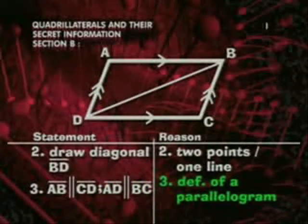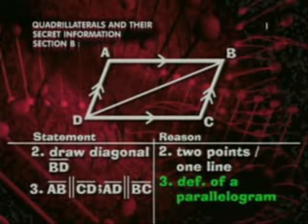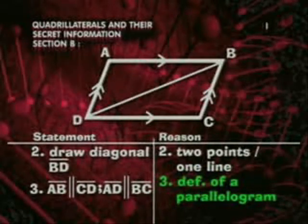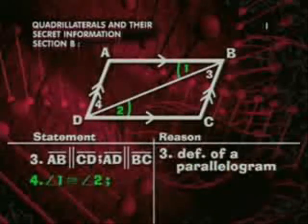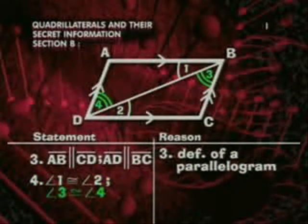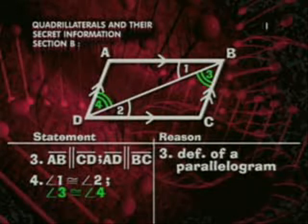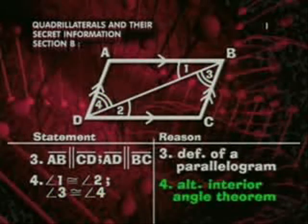Because this is the definition of a parallelogram. Now we have parallel lines and a transversal going on, and we can really figure out some angle correspondences. For our fourth step, we'll state that angle ABD is congruent to angle CDB, and angle ADB is congruent to angle CBD, thanks to the alternate interior angle theorem.